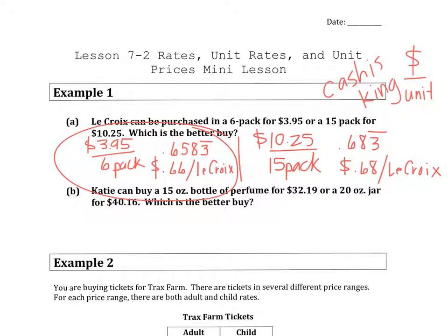In the second one, Katie can buy a 15-ounce bottle of perfume for $32.19 or a 20-ounce jar for $40.16, which is the better buy. Same strategy. We're going to have the $32.19 for 15 ounces. Make sure everything is labeled. And in the second one, sometimes I do the setup for both of them at the same time for the 20-ounce. So let's try the first one.